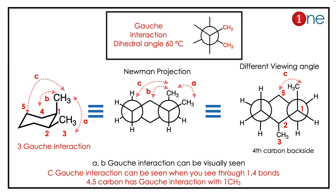Gauche interaction means the methyl groups are nearby with a dihedral angle of 60°. You can see the nearby methyl groups, but they are difficult to imagine in the chair form. So you should try the Newman projection with the carbon-carbon bond on the back side — then you can imagine it clearly.